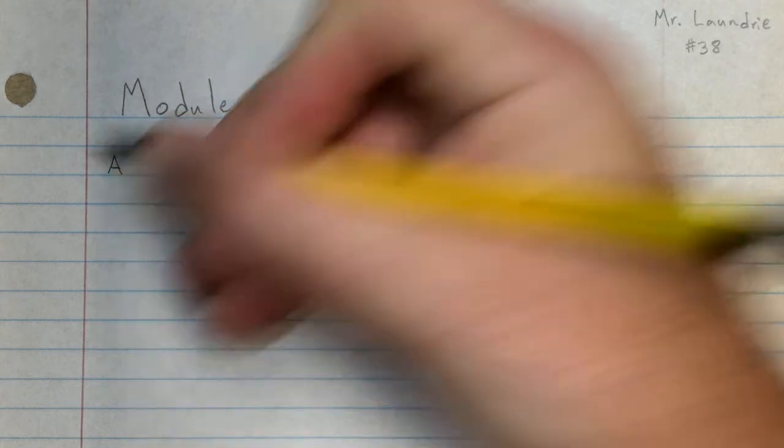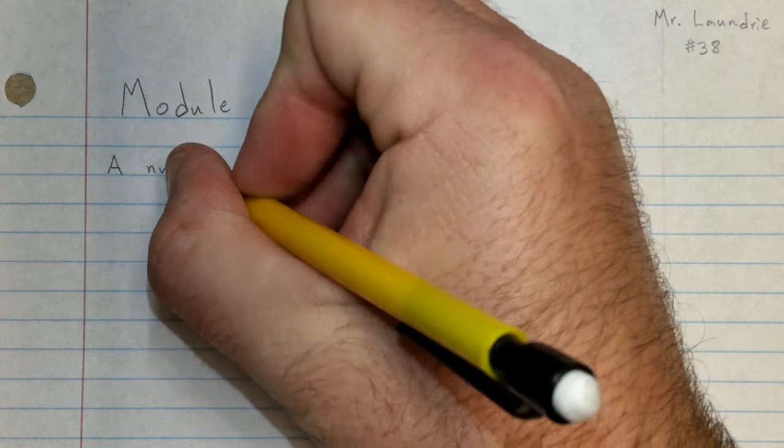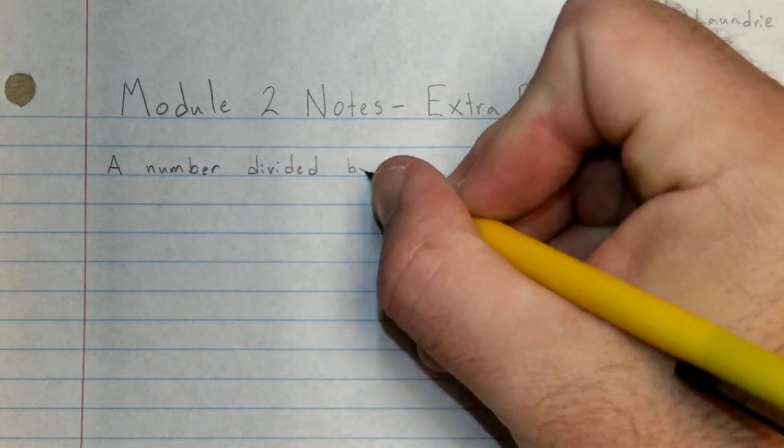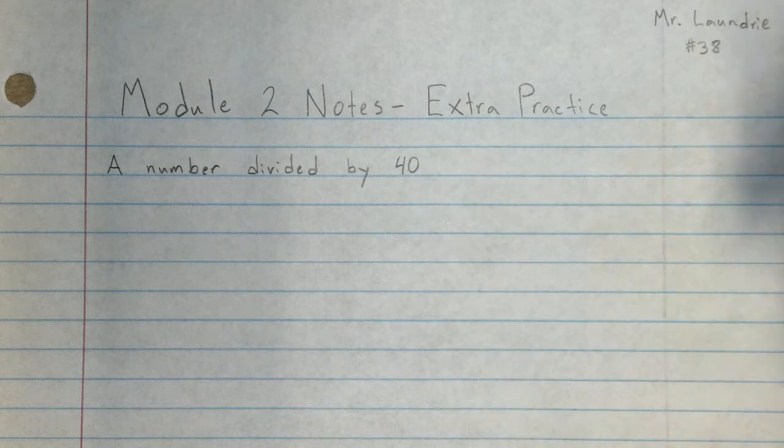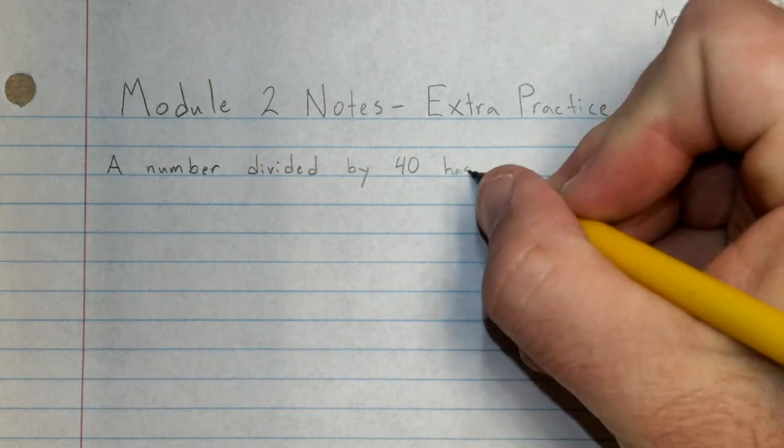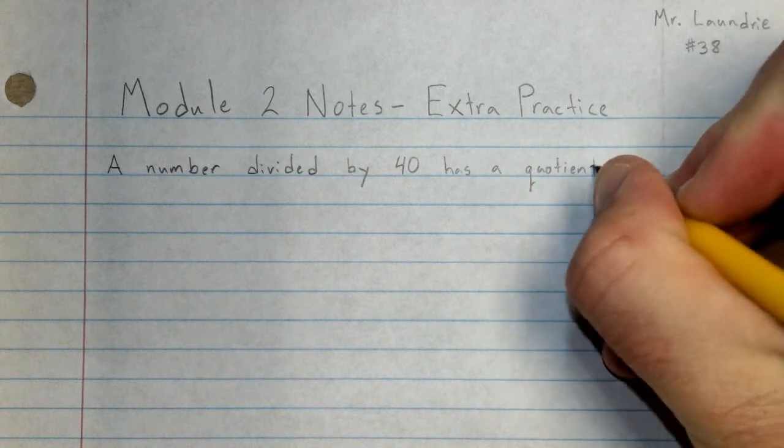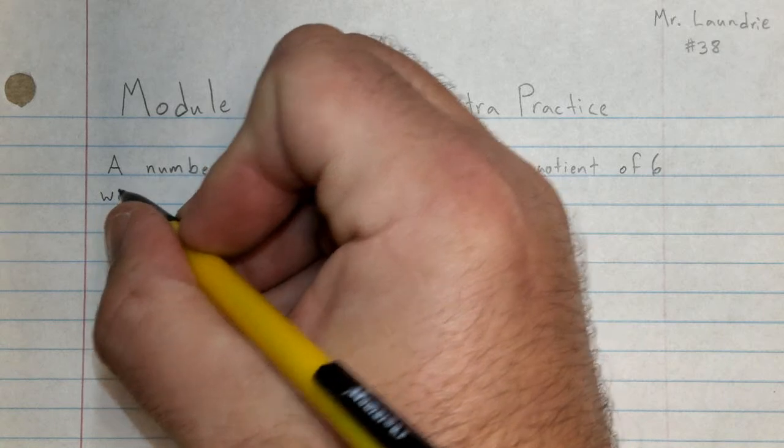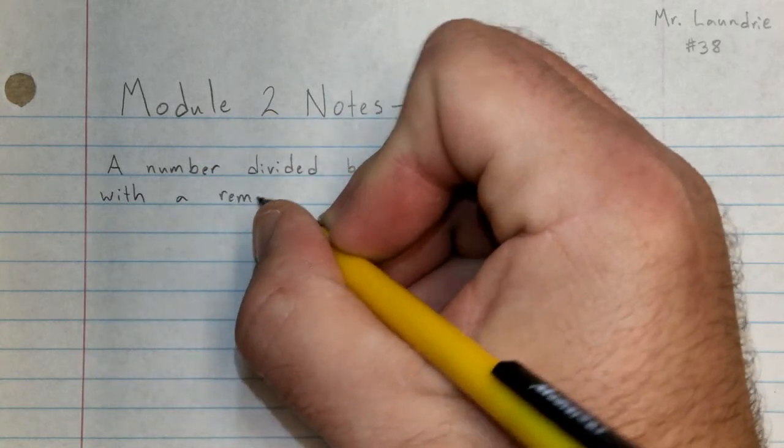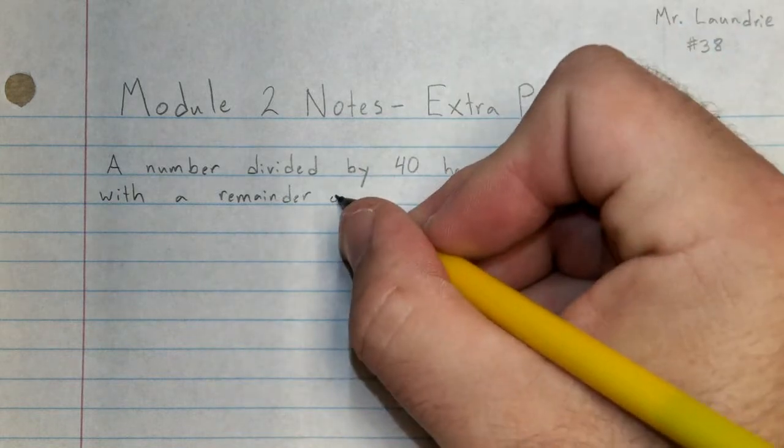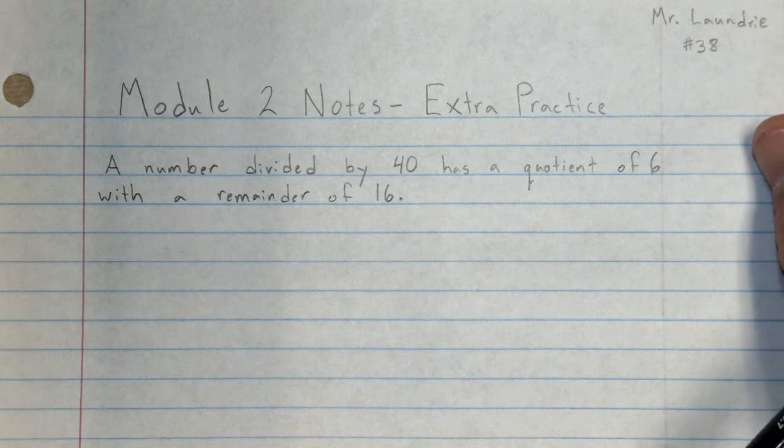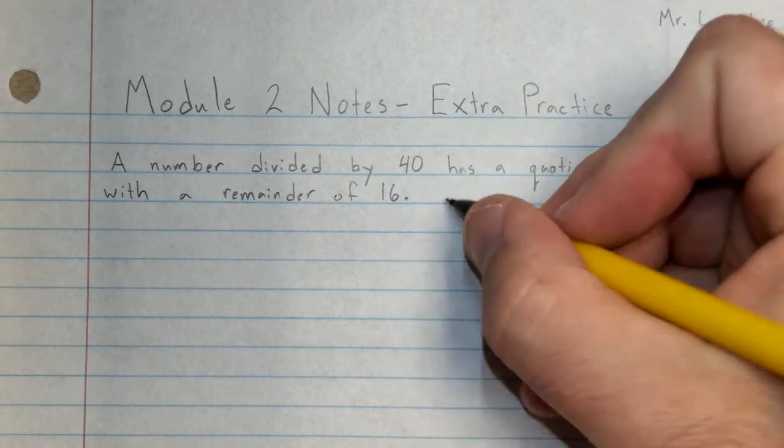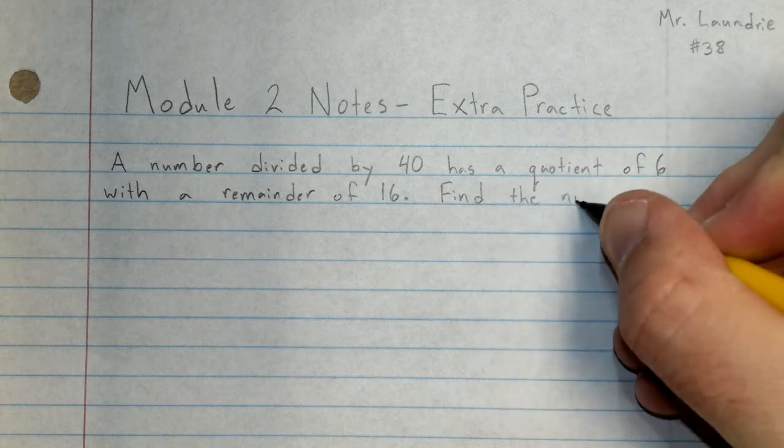Let me write it down for you. A number divided by 40 has a quotient of 6 with a remainder of 16. Some mystery number divided by 40 has a quotient of 6 with a remainder of 16. Find the number.